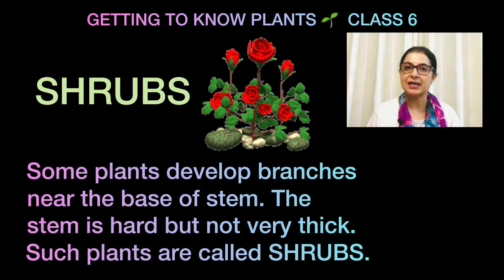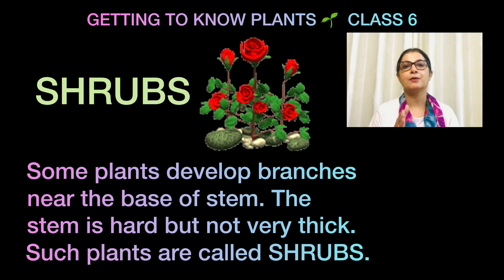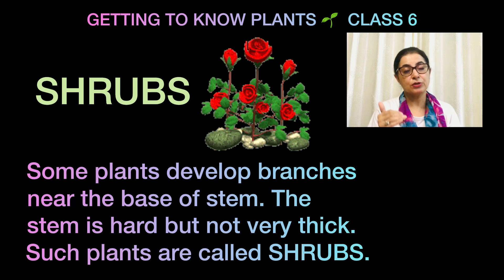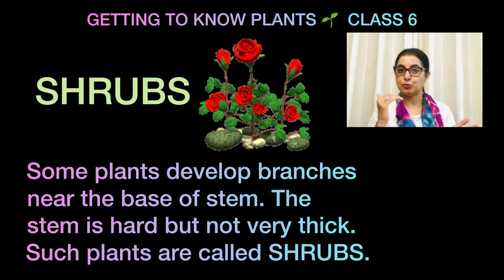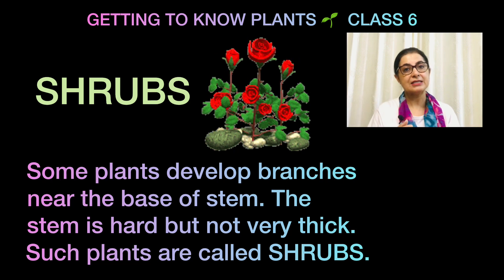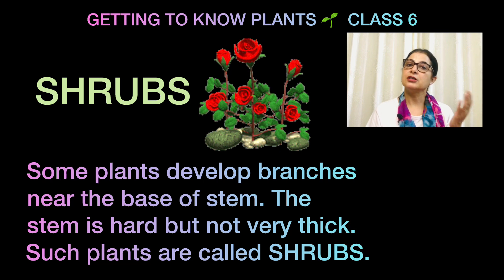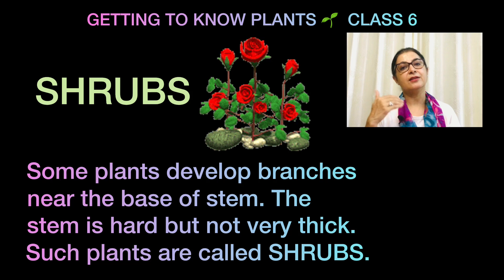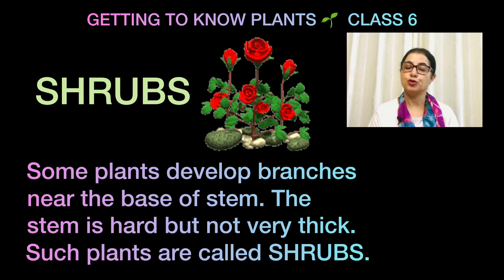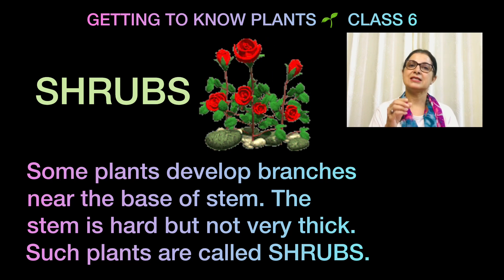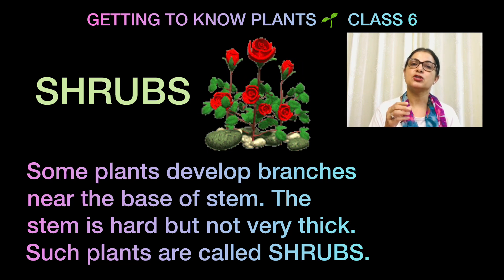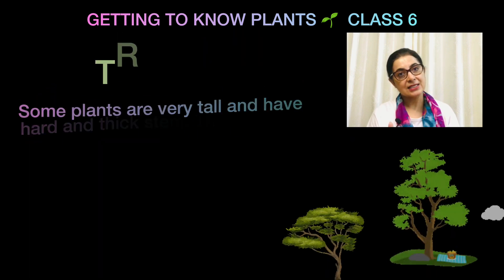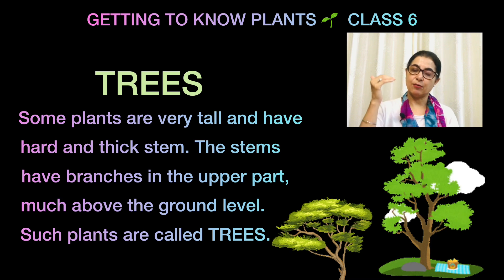Another thing to remember about shrubs is that their stems are comparatively stronger and thicker. Their height is medium as compared to herbs and trees — they fall in between. The thickness of the stem is also comparatively medium. Herbs have very delicate stems compared to shrubs and trees. So shrubs are medium-height, bushy plants with stems that are thicker and stronger than herbs.